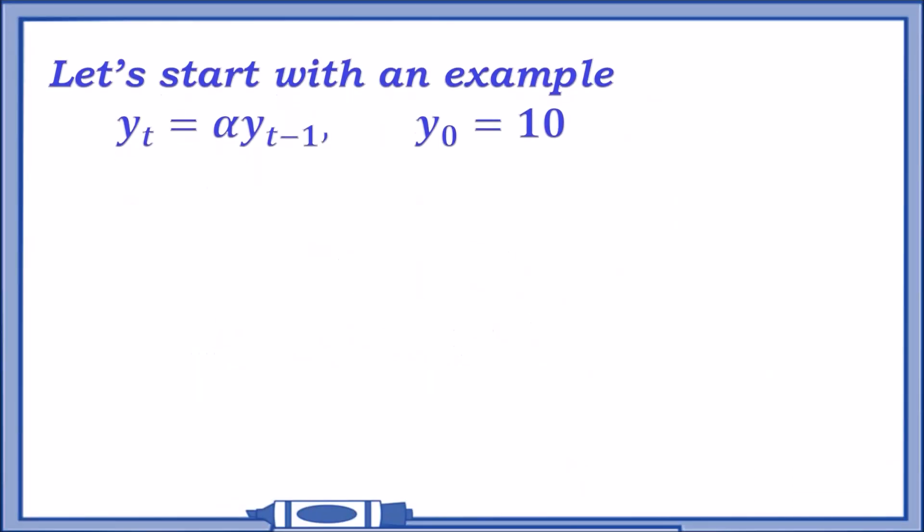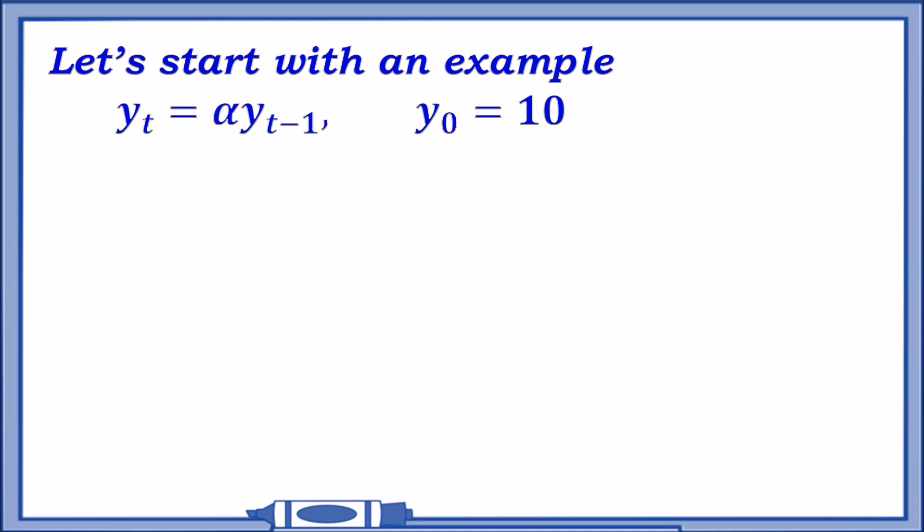Let's start with a nice example of the first one. Suppose we're given the difference equation. It looks like this: y_t equals alpha times y_{t-1} with initial condition at t equals 0 for y_0 equals 10. So what do we do from here and how do we solve it? Well, let's just take from basics.